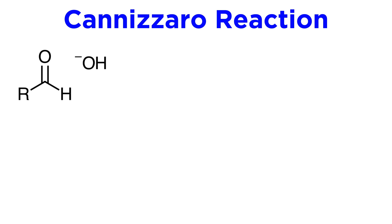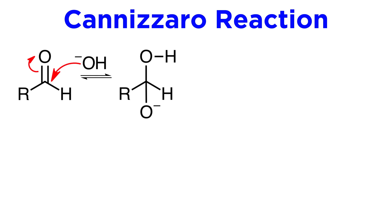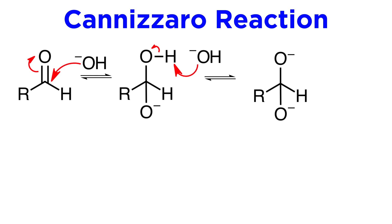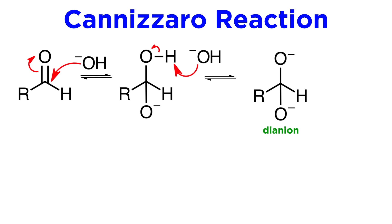Beginning with this generalized aldehyde and under strongly basic conditions, the hydroxide ion attacks the carbonyl to form this species at equilibrium. Under sufficiently basic conditions, this species can be deprotonated to form this dianion, again at equilibrium. Although the main species in solution is the previous one, the dianion is much more reactive, and it is believed that the key step proceeds via this species.